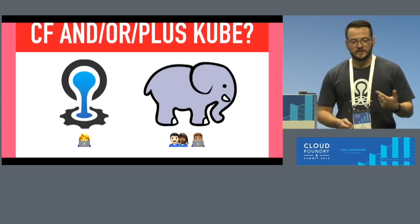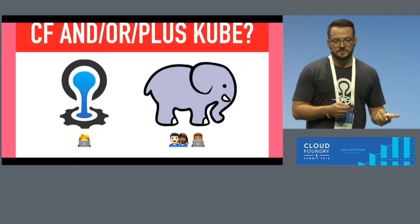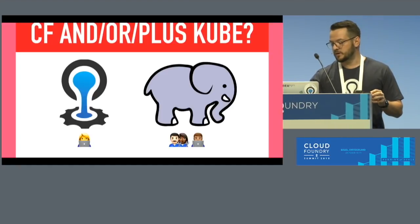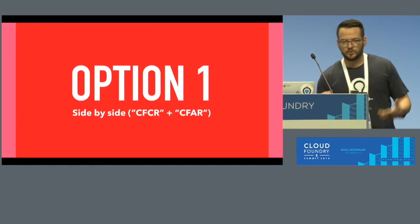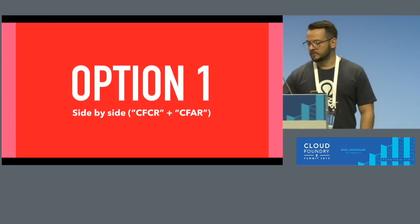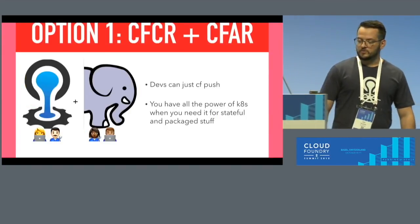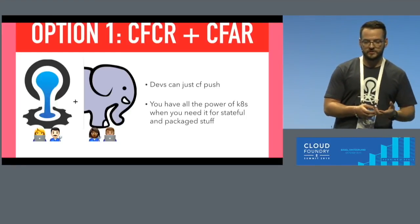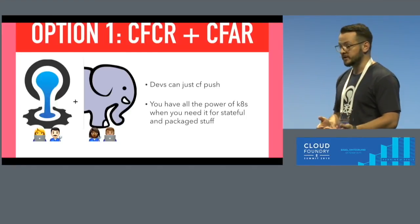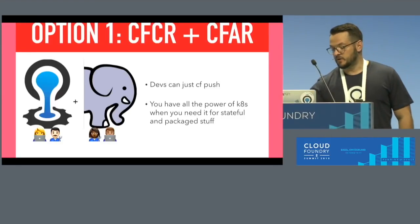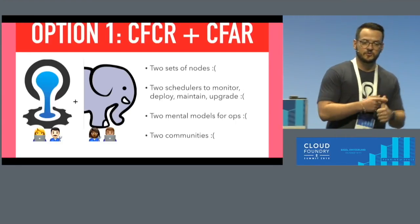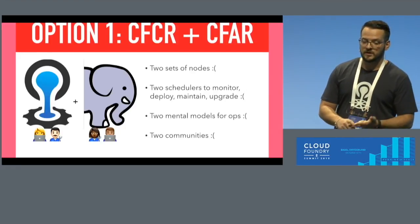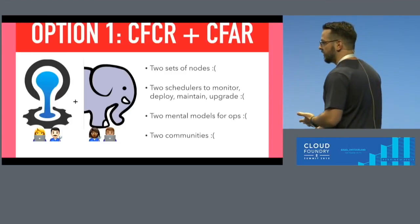A few people have suggested solutions. The first option is putting them side by side: you get the full power of Cloud Foundry, the CF Push experience, and the full power of Kubernetes. But there are downsides — you have two sets of nodes, two schedulers to monitor, two different ops models, and two communities. It's a lot of effort.